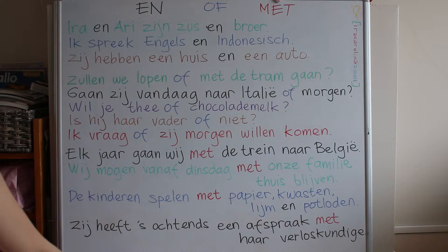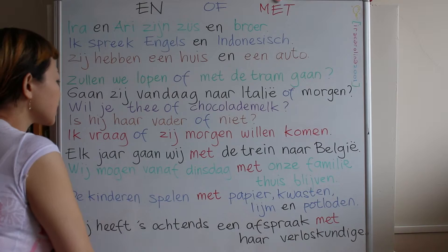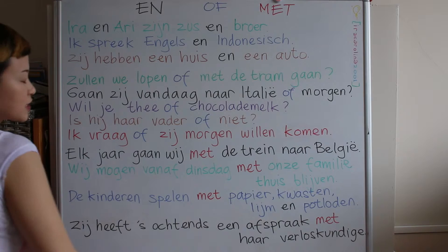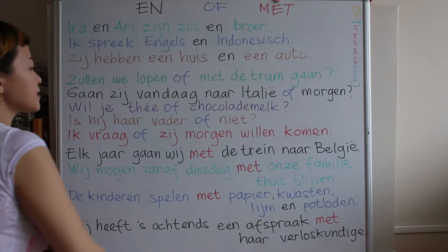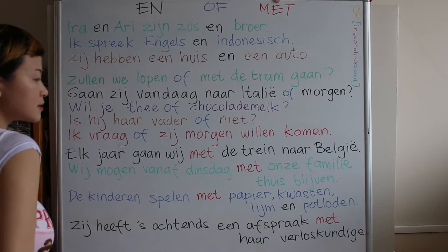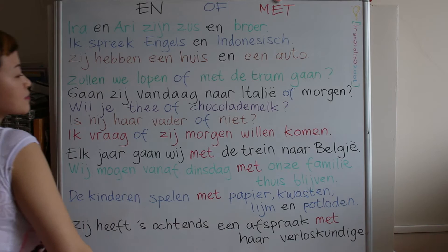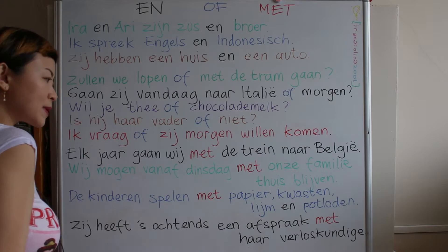'De kinderen spellen met papier, kwasten, lijm en potloden.' — The children play with paper, brushes, glue, and pencils. 'Kwast' is brush; 'kwasten' is brushes — more than one. 'Lijm' is glue. 'Potloden' is pencils — the plural of 'potlood'.